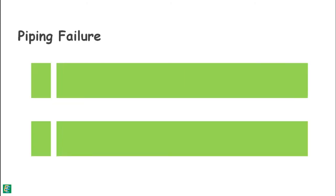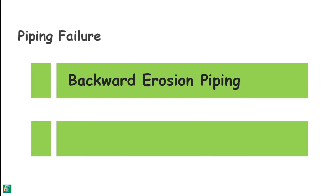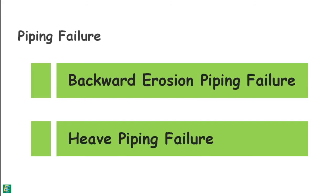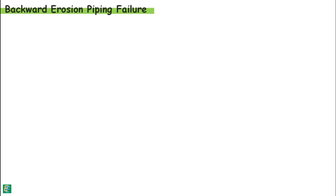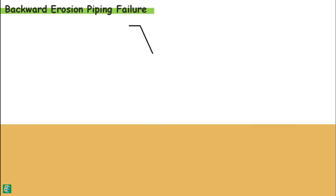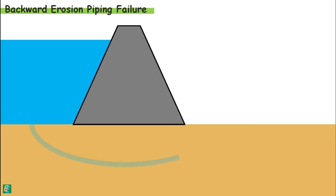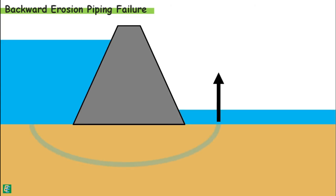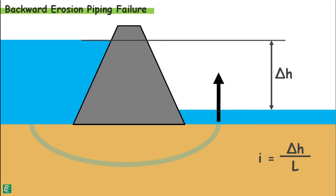There are two types of piping failures: backward erosion piping failure and heave piping failure. When water percolates through the soil under any hydraulic structure, it may exit vertically upwards at the downstream. If this water moves with a high hydraulic gradient, the seepage force exerted on the soil particles may push them up, and the soil particles at the exit point may be removed by the force of water.